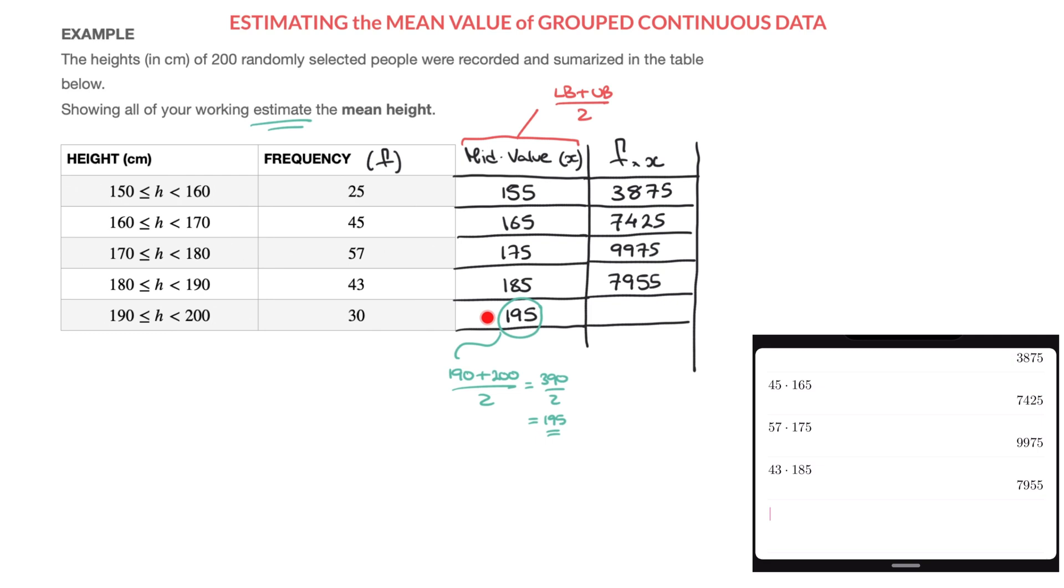And the last cell we need to fill in here, we'll have 30 times 195. And again, I use my calculator, 30 times 195, and that's equal to 5850.